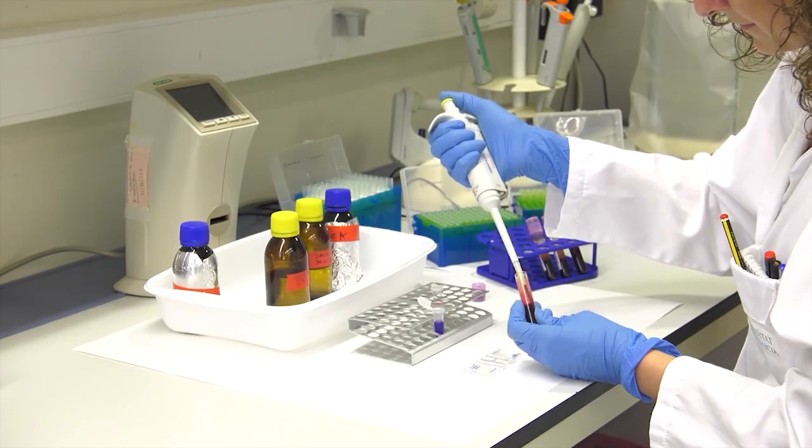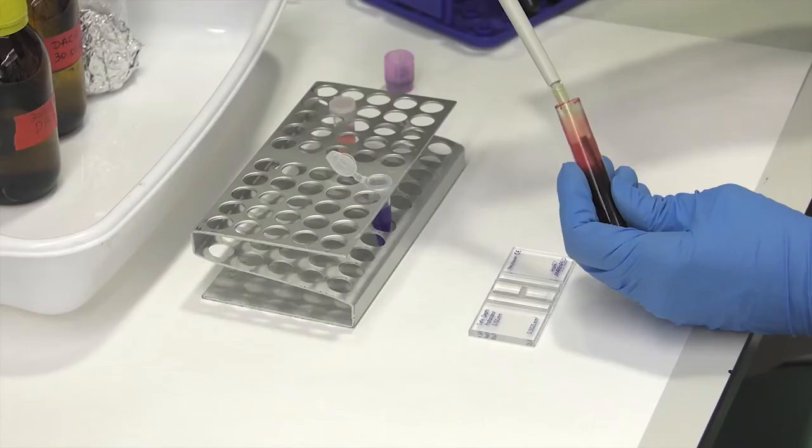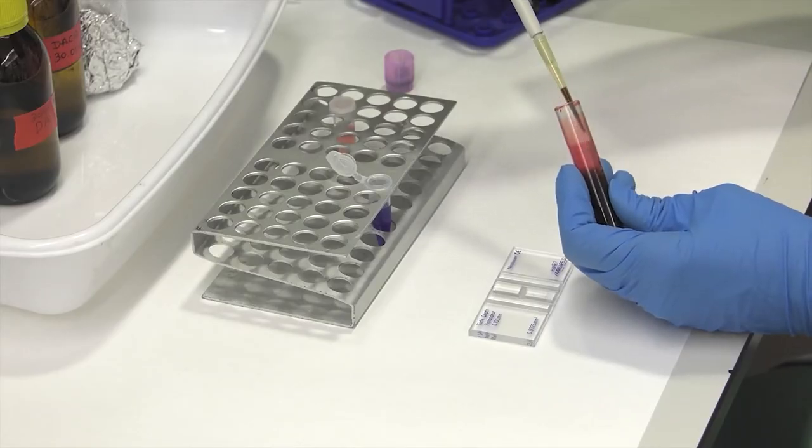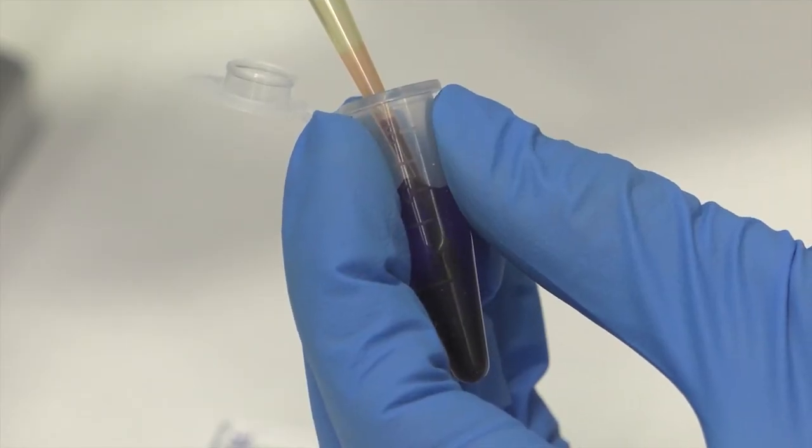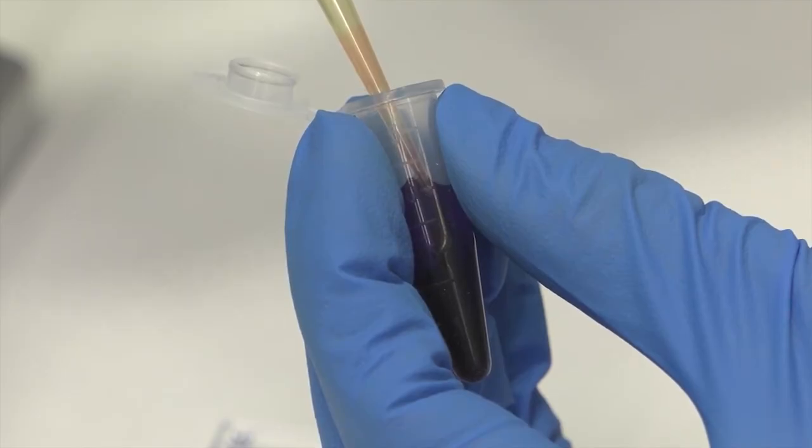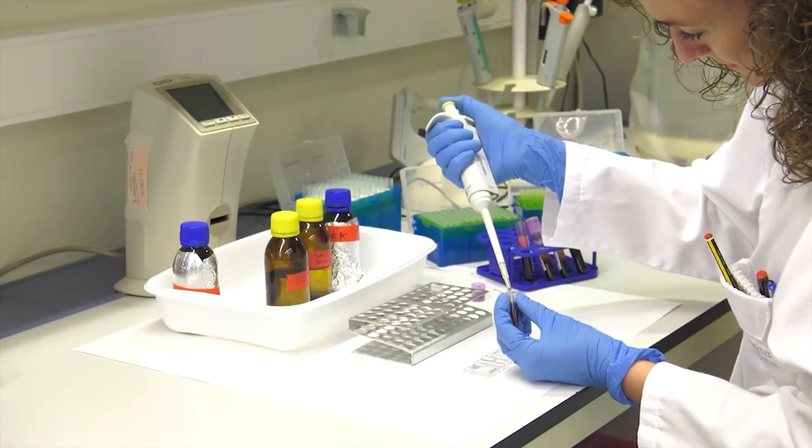The number of leukocytes in the blood is lower than the number of erythrocytes, so the dilution we use will be lower. In this case, we will make a 1 to 20 dilution by adding 950 microliters of TURK reagent and 50 microliters of blood.